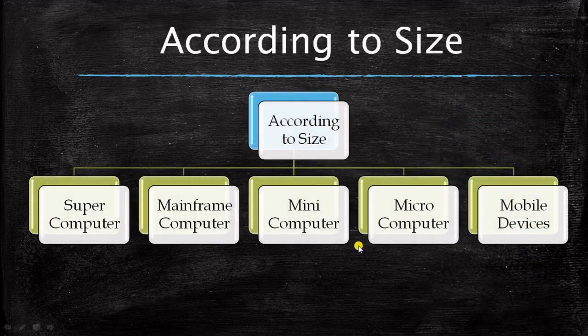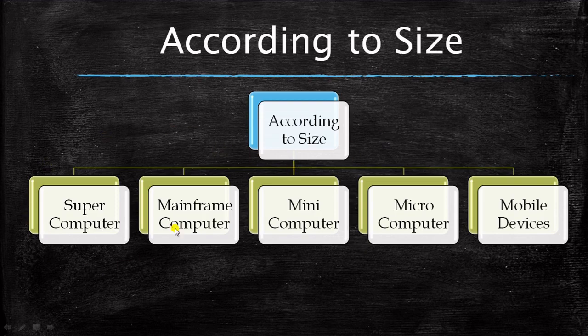So to summarize, computers categorized according to purpose include analog computers, digital computers, and hybrid computers. Now when it comes to size, there are five kinds of computers from the biggest to the smallest. In this section, I will be covering only the first two — supercomputer and mainframe computer — and the rest will be covered in the next video.